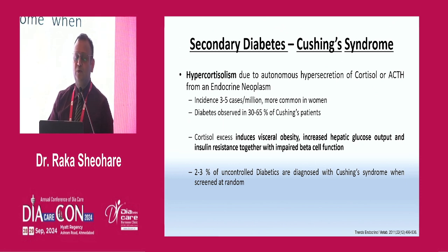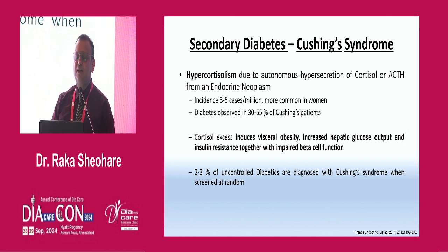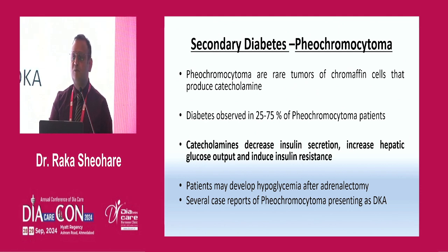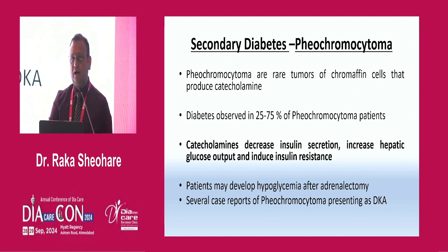GH-induced insulin resistance is manifested by striking hyperinsulinemia in response to oral or IV glucose, with a markedly attenuated response to exogenous insulin. Now Cushing syndrome — hypercortisolism due to autonomous hypersecretion of cortisol or ACTH from an endocrine source. This cortisol axis causes visceral obesity, increased hepatic glucose output, and insulin resistance, together with decreased beta cell function. Two to three percent of uncontrolled diabetics in your clinic can have Cushing syndrome.